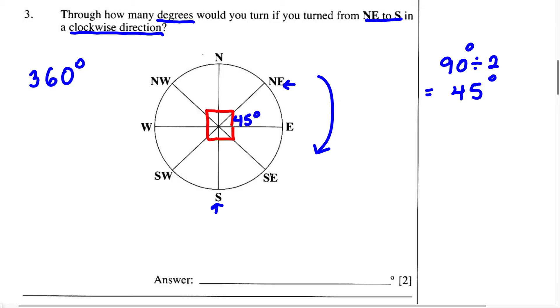Therefore, from east to southeast it's going to be 45 degrees again. From southeast to south, we're going to have another 45 degrees.